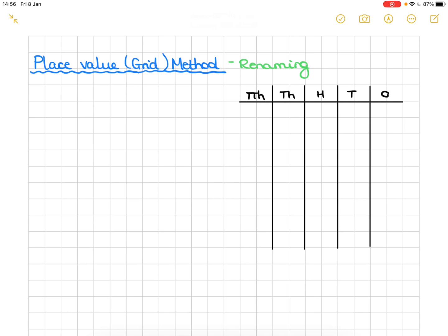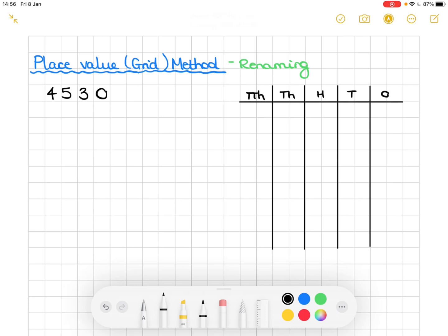So today's question is 4530. If I pop that down, we're dividing this number by 3. So we're grouping it into three parts, three sections.